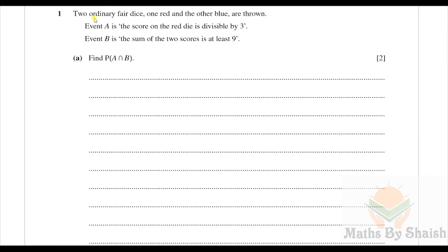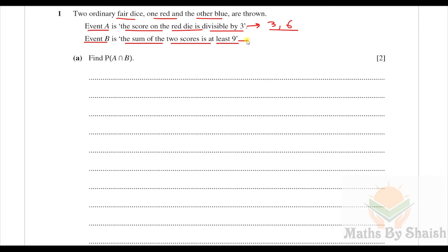The first question: two ordinary fair dice, one red and one blue, are thrown. Event A is that the score on the red die is divisible by three — so only possibilities are three and six. Event B is that the sum of the two scores is at least nine, so it can be nine, ten, eleven, or at most twelve (since the maximum is six and six). Find the probability of A intersection B.